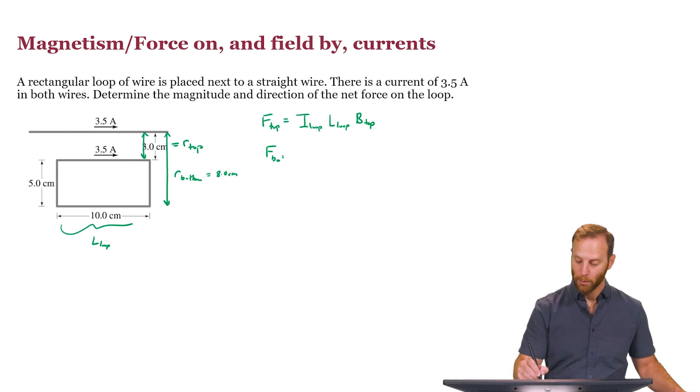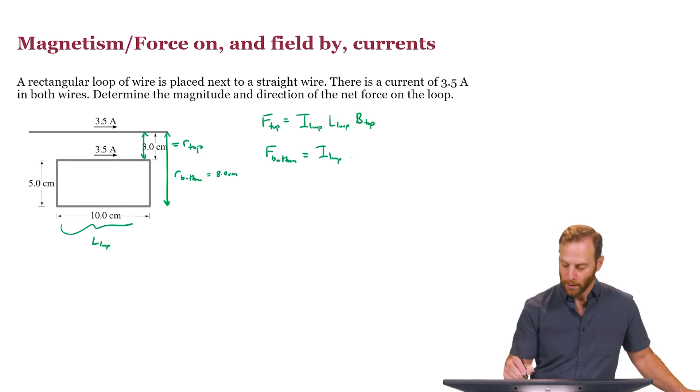We can write down a similar formula for the force acting on that bottom part of the rectangle. It's the same current in the loop. It's the same length. It's the same width. The only thing that's different is the strength of the magnetic field at the location of the bottom part of the loop.